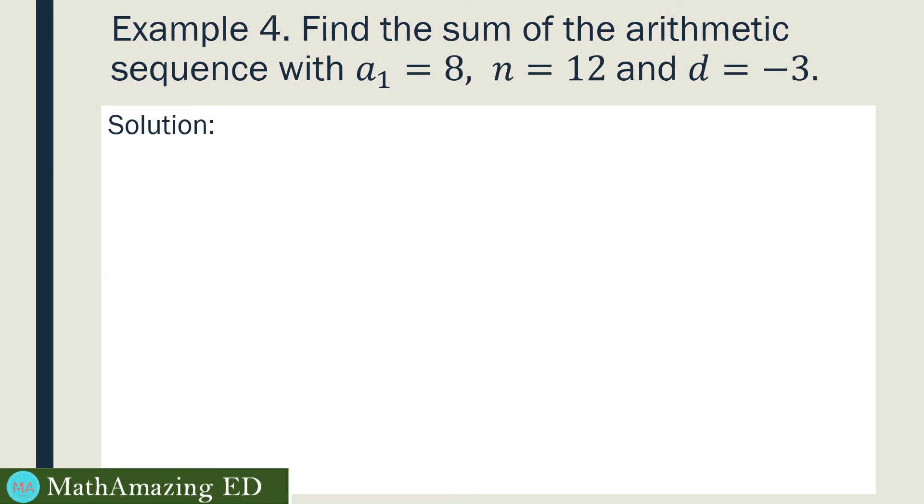Next, find the sum of the arithmetic sequence with a sub 1, or the first term, which is equal to 8. n is 12, and d is equal to negative 3. Let's write the given values down for our solution. n is 12, a sub 1 is 8, and d is negative 3.